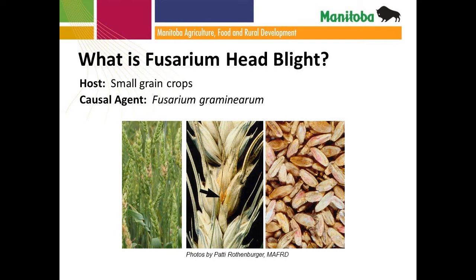In terms of symptoms typically seen with fusarium head blight, moving from left to right in the photos: in the field, you'll often see bleached heads — that's often the first telltale sign of infection. The infection can be either the entire head or just sections of the spikelet. In the center photo you can see masses of white, pink, or orange spores forming along the base of the glumes. Once harvested, you'll see shriveled, shrunken, or lightweight kernels — we refer to these as fusarium damaged kernels, or FDK.